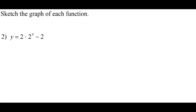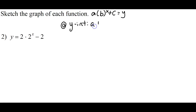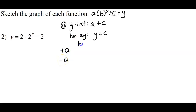So to graph an exponential function, first you want to find your y-intercept. When you have an exponential function, it's usually going to be of the form like that. The y-intercept is going to be the A value added to the C value. Then we're going to find a horizontal asymptote — it will always be y equals whatever the C value is. Finally, we get the shape, which is based on two things: the A value, whether it's positive or negative, and the B value, whether it's bigger than one or less than one.